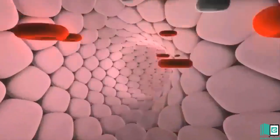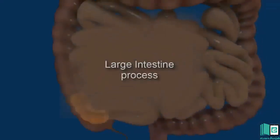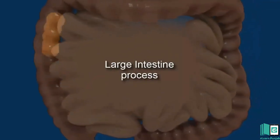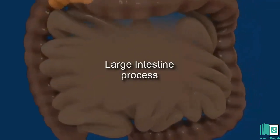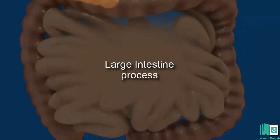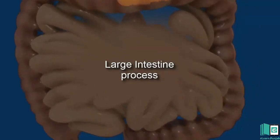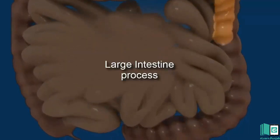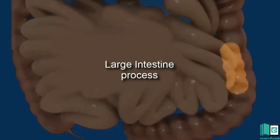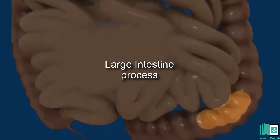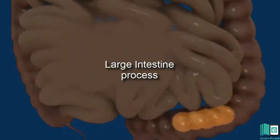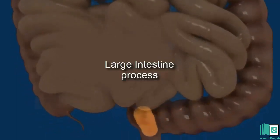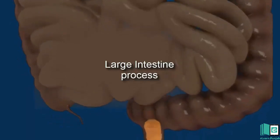Large Intestine. The undigested parts of the food pass into the large intestine. Here the undigested food has a large amount of water. The main job of the large intestine is to absorb extra water. The undigested food becomes solid and is called feces. The feces is stored in the last part of the large intestine called the rectum. We pass the feces out of our body through the anus.